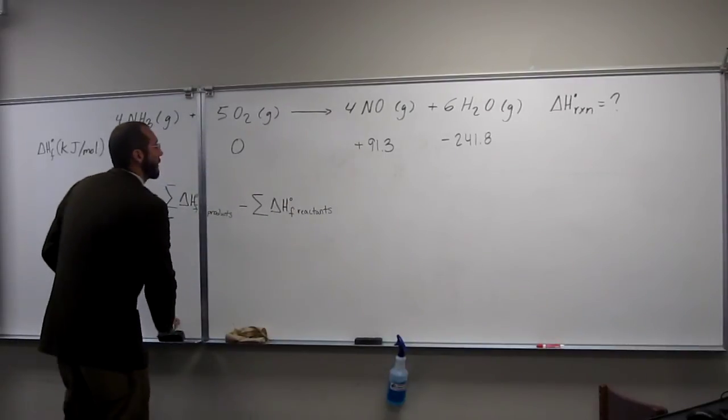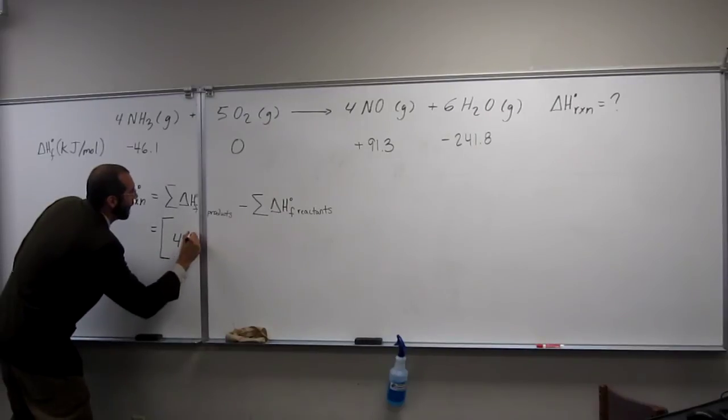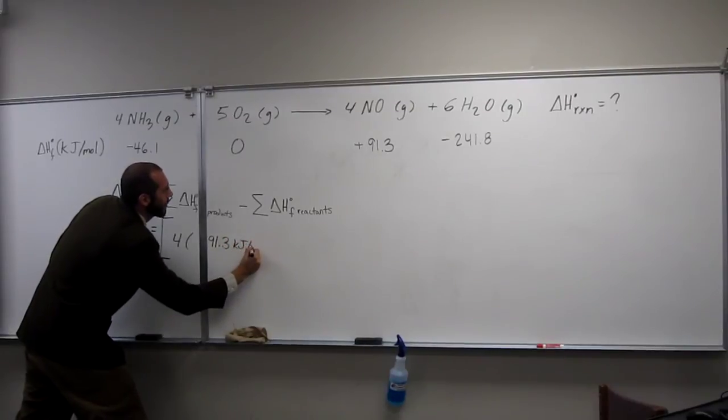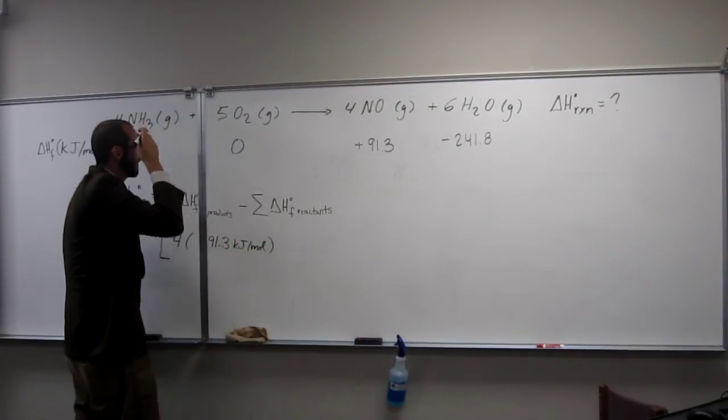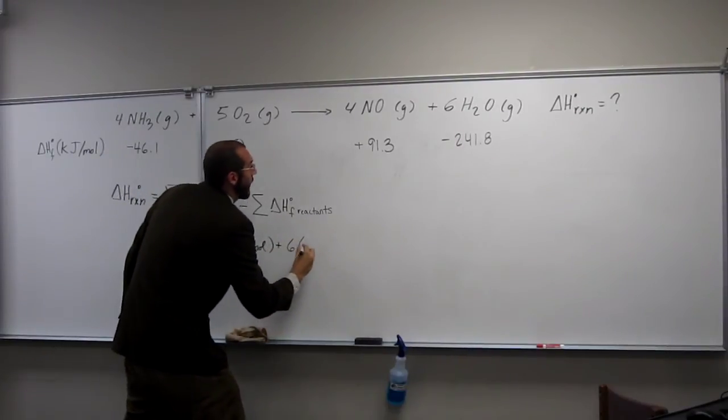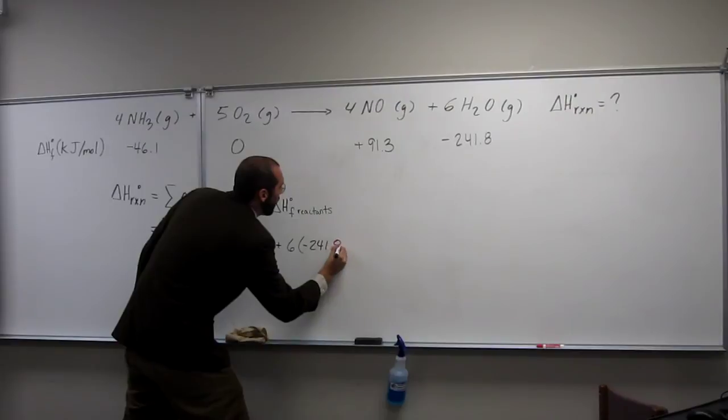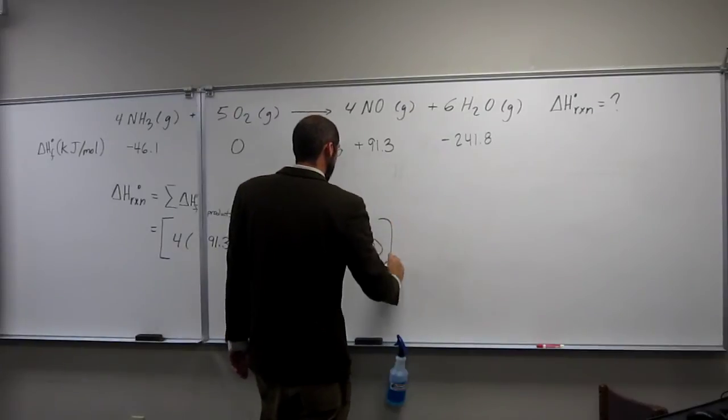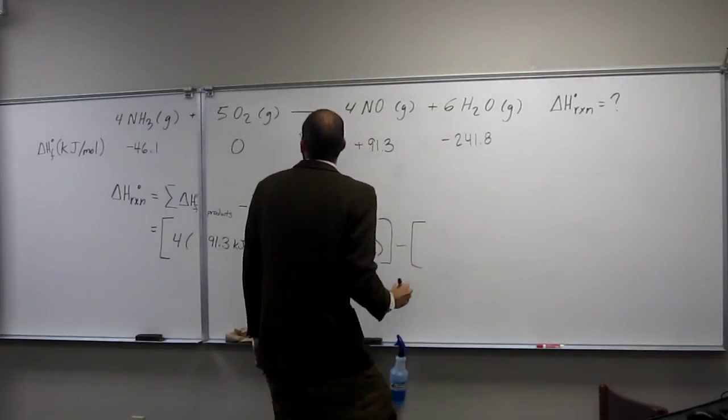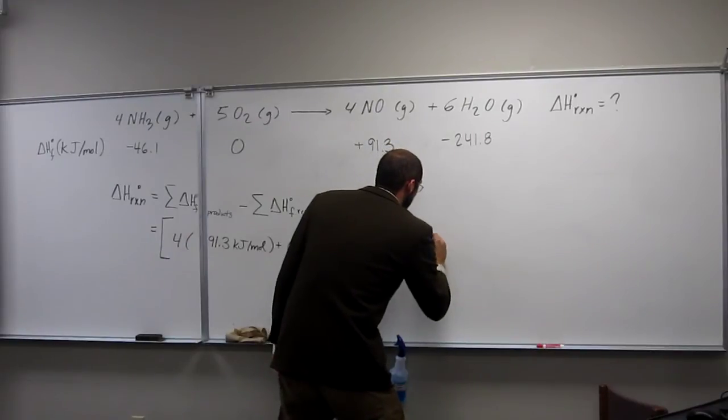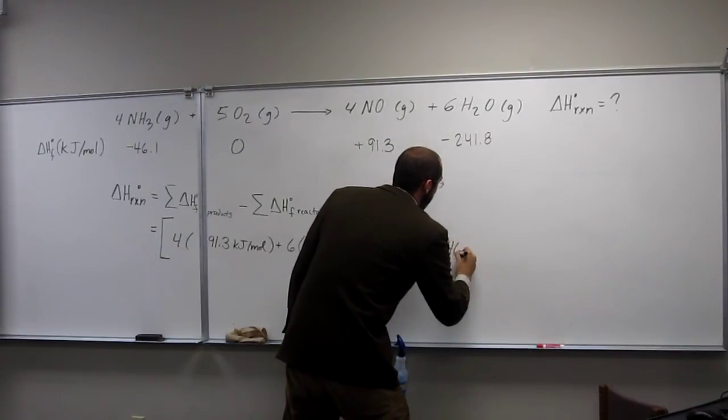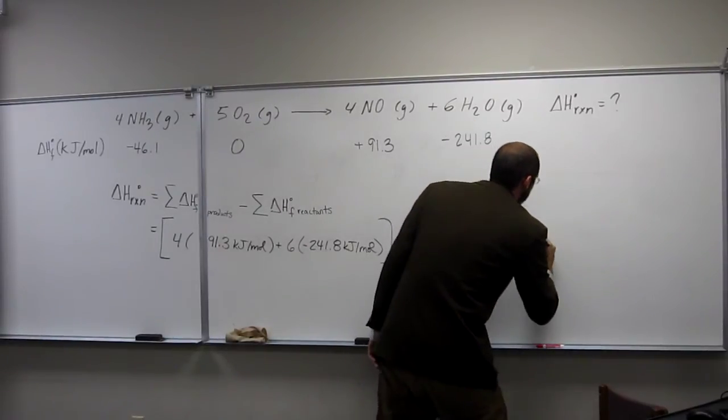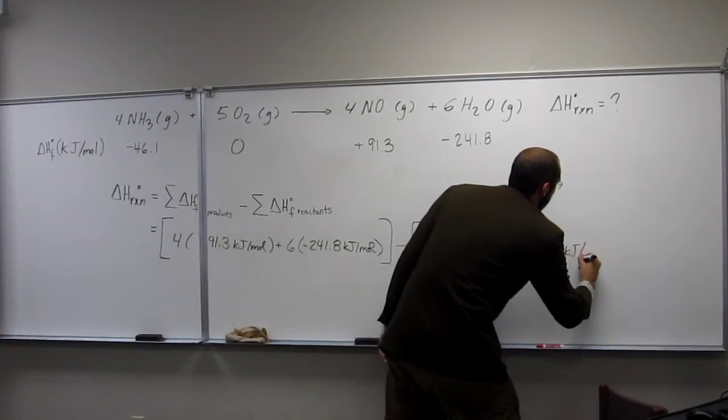I'm going to do the products minus the reactants. I was testing you guys. 4 times 91.3 kilojoules per mole, plus 6 times negative 241.8 kilojoules per mole, minus 4 times negative 46.1 kilojoules per mole, plus 5 times 0 kilojoules per mole.